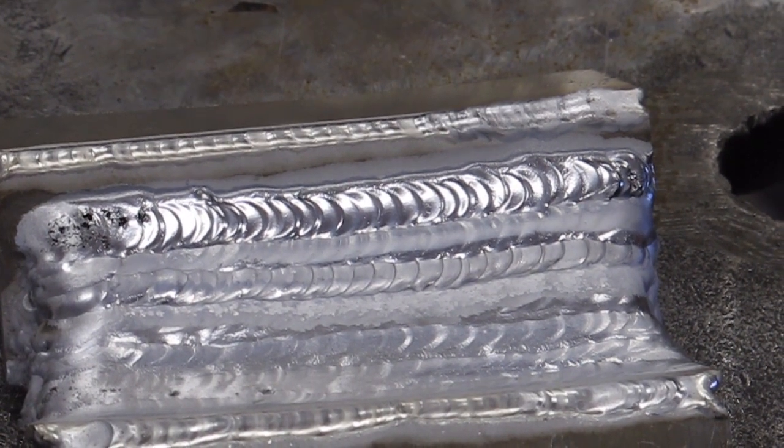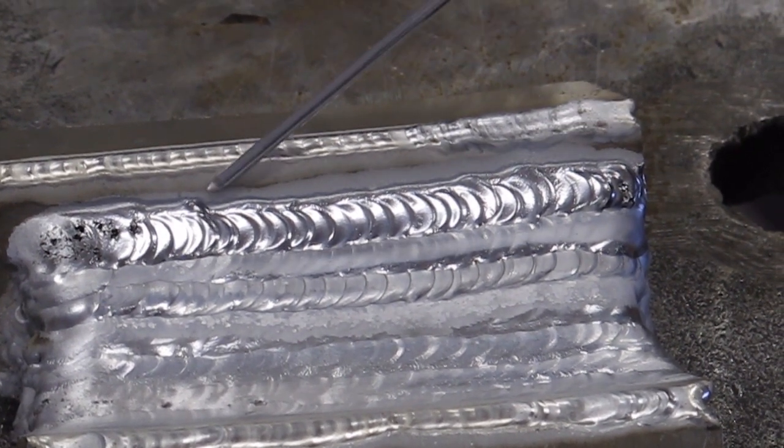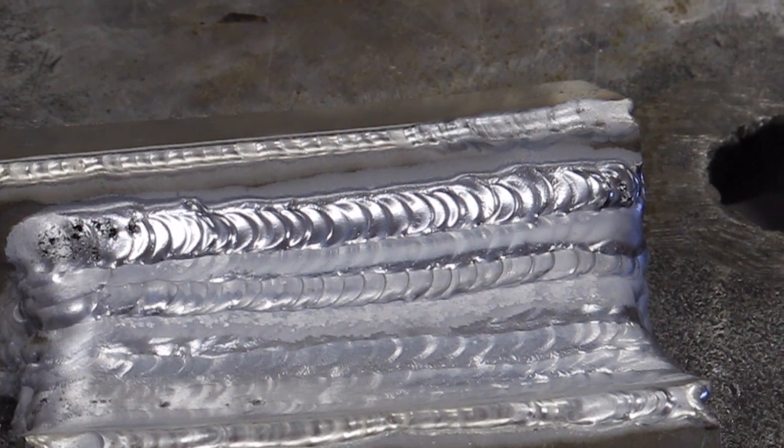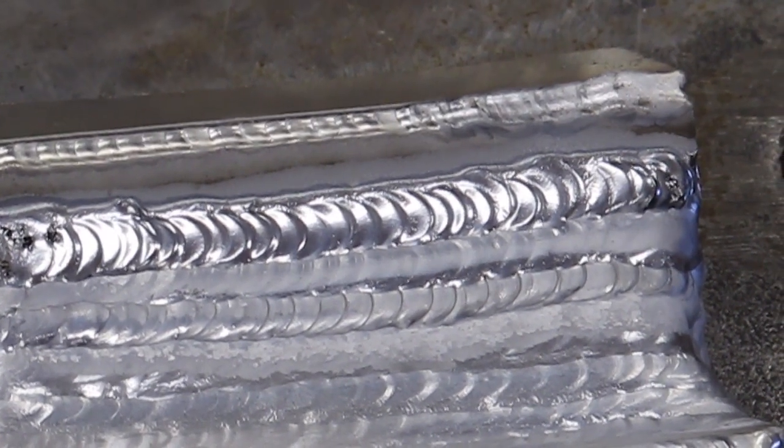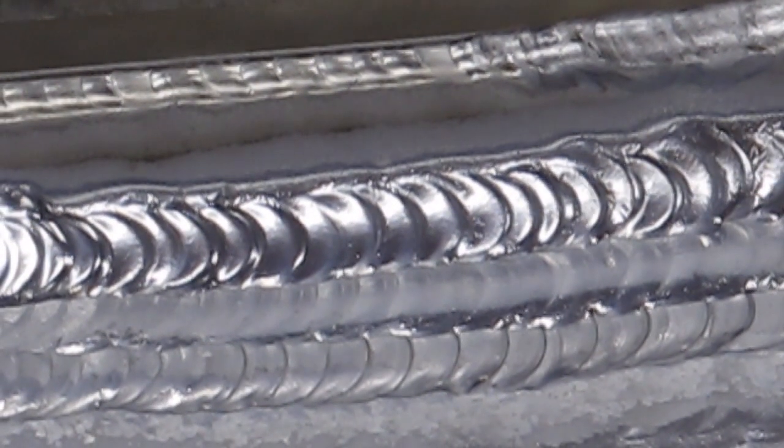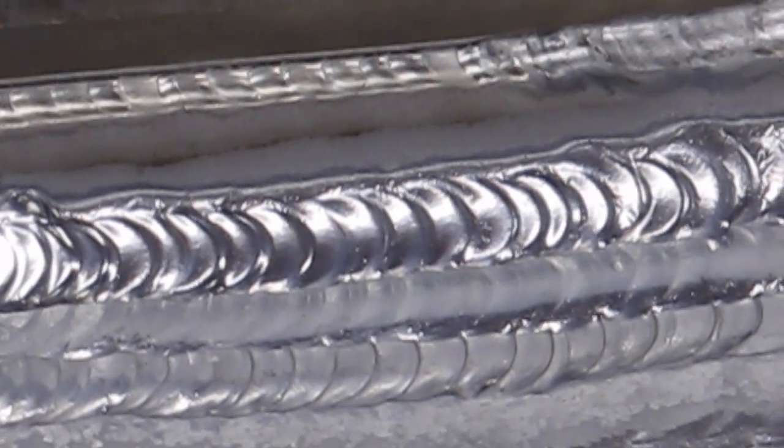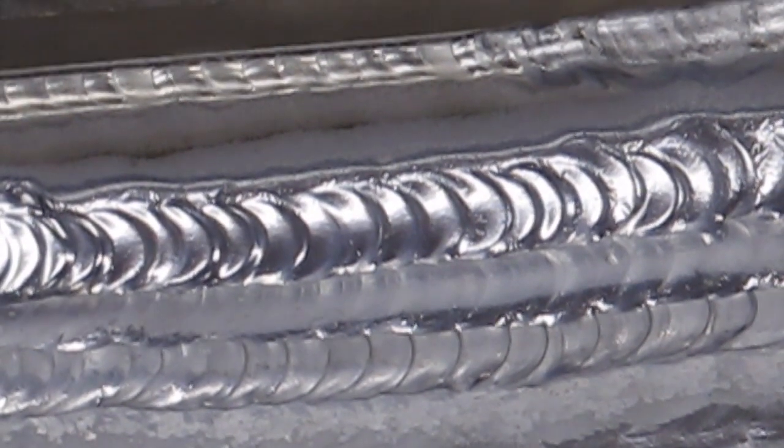Okay, so if you notice here, we have a very nice, shiny weld. And if you do everything right, and you have good gas coverage, and your tungsten is clean, your metal is clean, and your filler material is clean, this is what you should get. Nice, bright, shiny aluminum weld. Now, notice this.